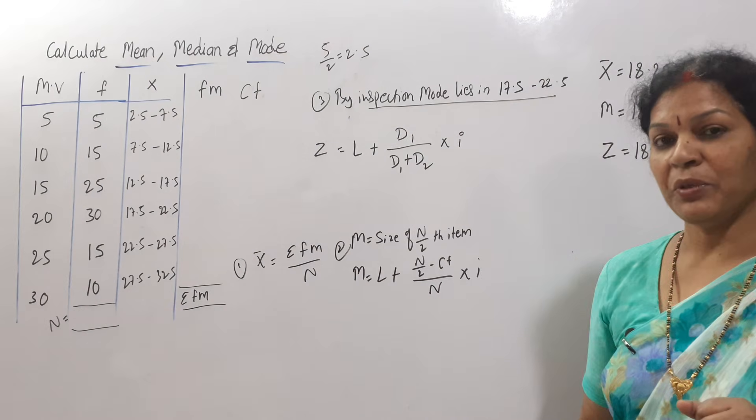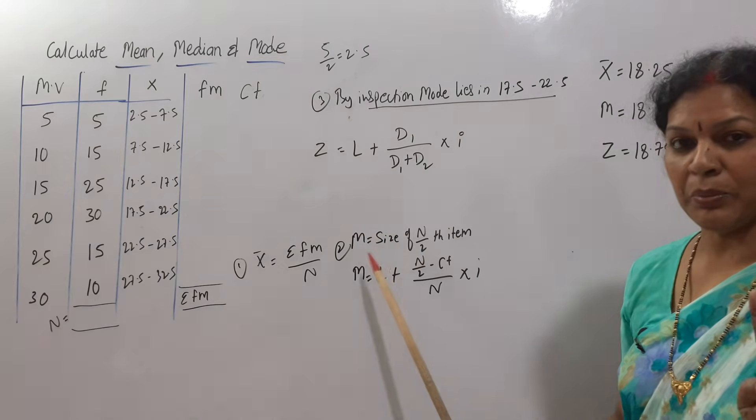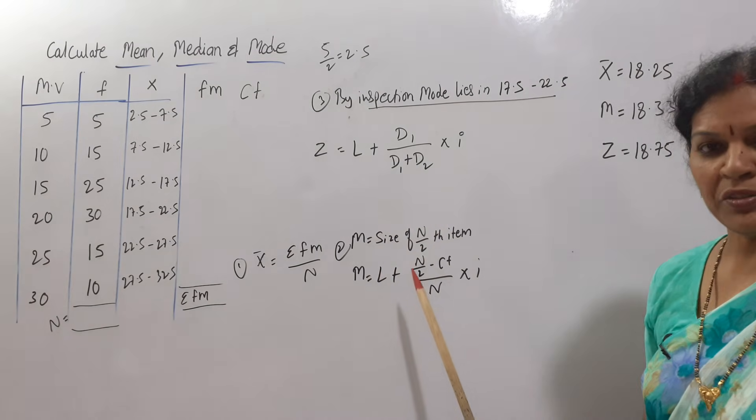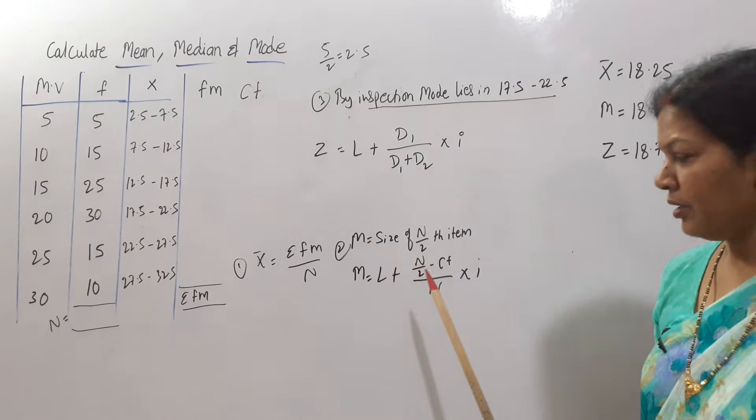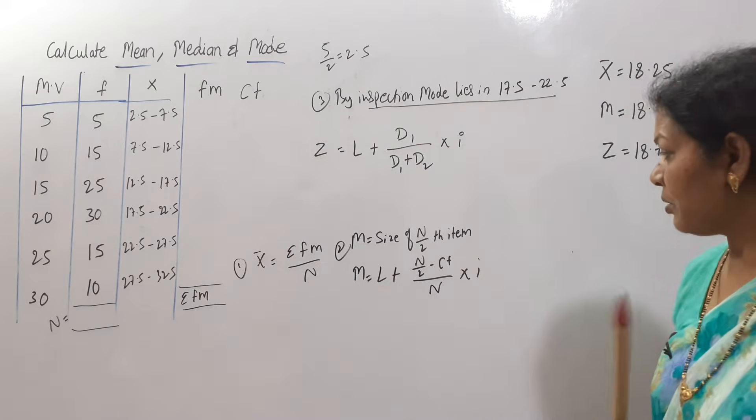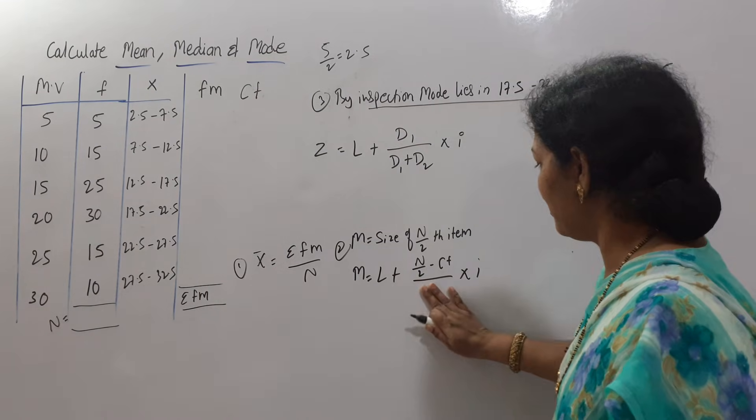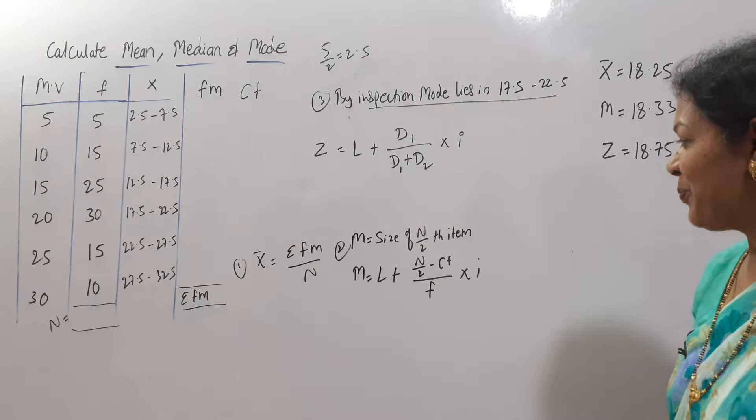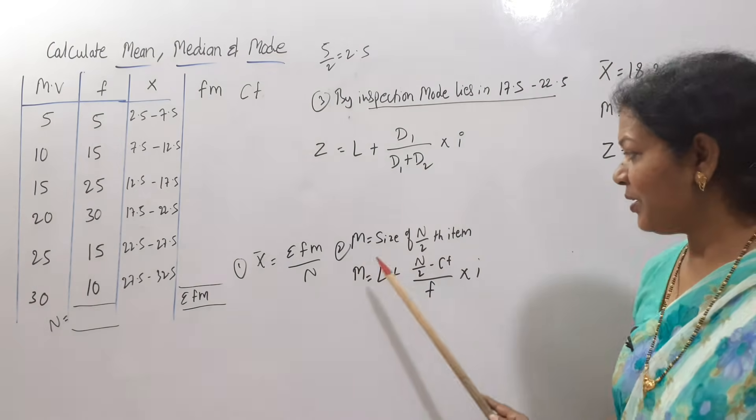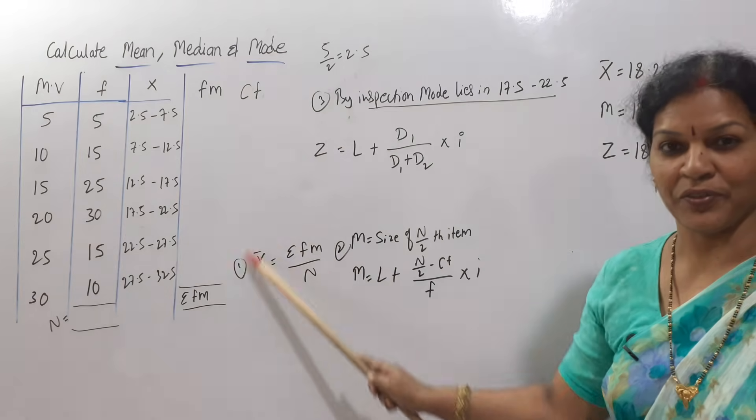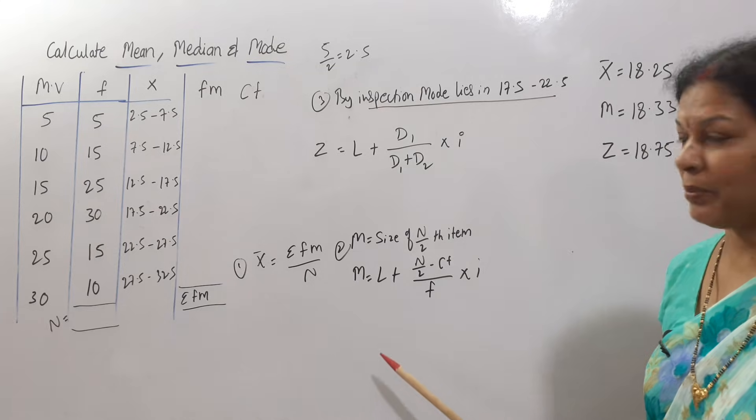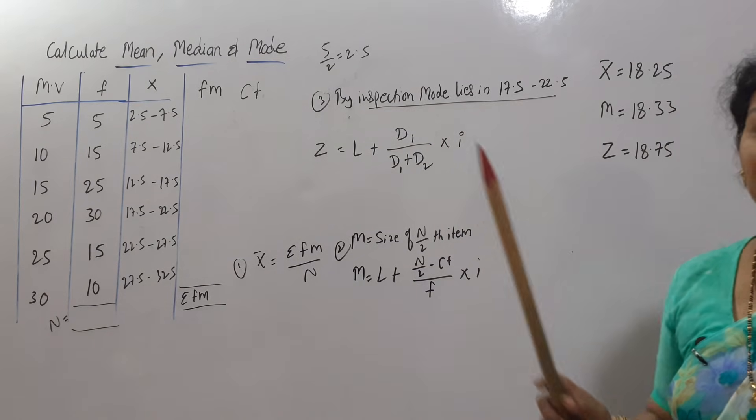And the second one is that median. For median two formulas, write it. Size of n by 2th item, then next formula L plus n by 2 minus cf by frequency f into i. This is the formula. N by 2th item means first we need cf cumulative frequency. Prepare that, identify where it lies, then according to that apply this formula.